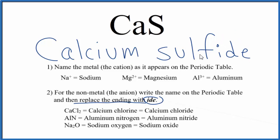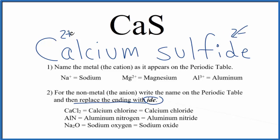If you needed to write the formula, you need to recognize that calcium is in group 2 on the periodic table. It has a 2+ ionic charge when it forms a bond. And then sulfide is 2−. So 2+ and 2− add up to zero, so the formula is CaS.